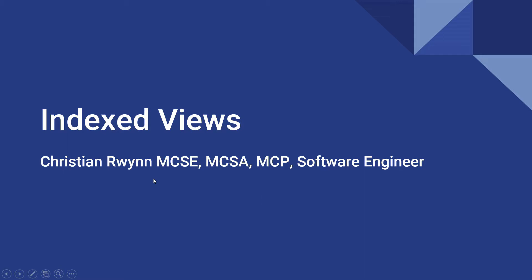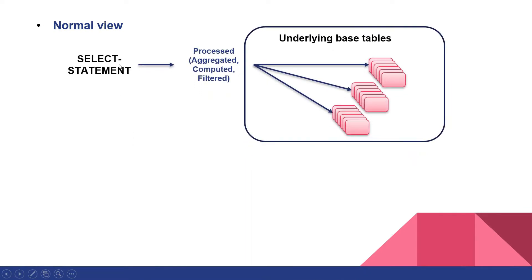In this video we'll only focus on the clustered and the non-clustered indexes. As we've seen in the previous videos, a normal view is basically a select statement. Once it's queried, the select statement is executed and data is retrieved from the underlying tables, after which it's processed. Reading the data can be one of the costliest processes of querying a view. To retrieve the data from the underlying tables, SQL Server needs to read the data pages of each underlying table that contains the qualifying data. This can cause a lot of logical and or physical reads, which is bad for query performance.